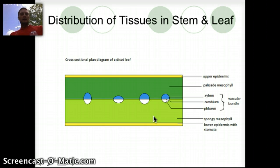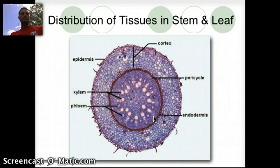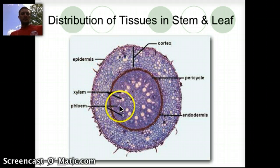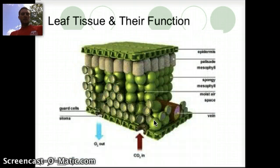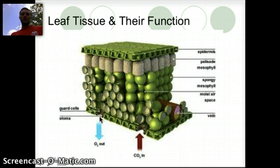We'll take a look at these in class in labs as well. Another view shows an actual cell view with the epidermis, the xylem and phloem, the cortex, and the endodermis. And this view has a nice outline including the stomata and the guard cells, which we're going to take a closer look at as well.